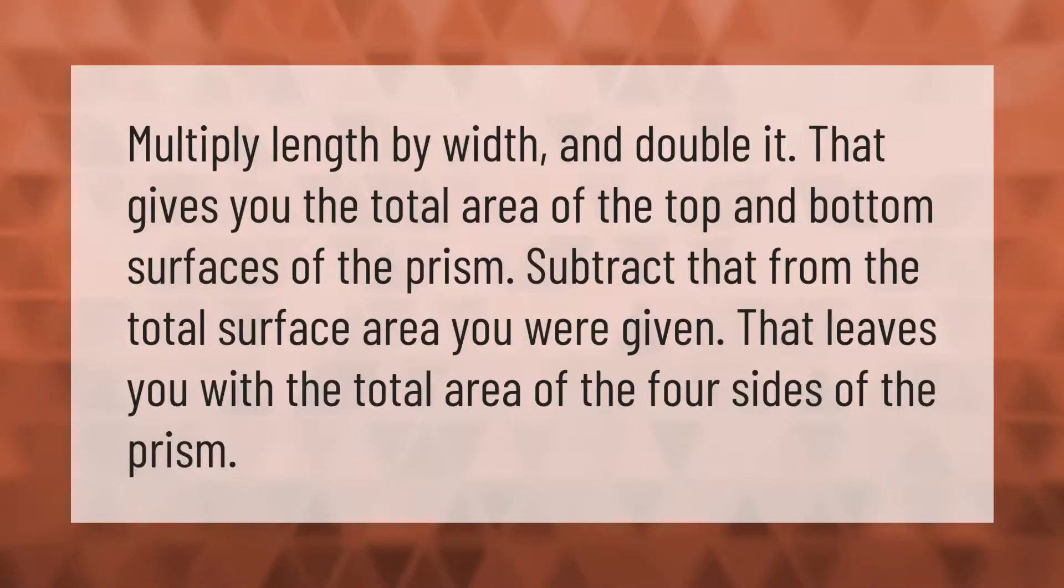Multiply length by width and double it. That gives you the total area of the top and bottom surfaces of the prism. Subtract that from the total surface area you were given. That leaves you with the total area of the four sides of the prism.